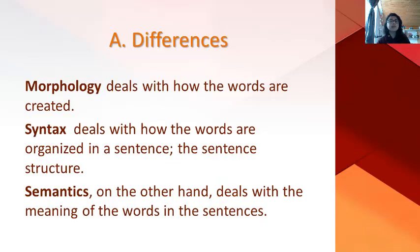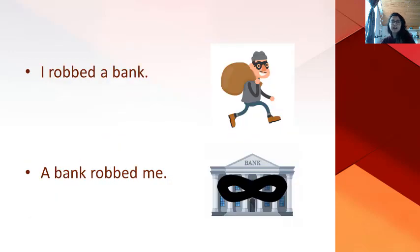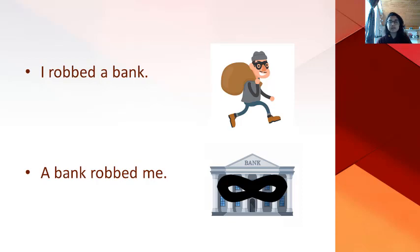Let's start with differences. Morphology deals with how words are created, syntax deals with how words are organized in a sentence and the sentence structure, and semantics deals with the meaning of words in sentences. For example, consider two sentences: 'I wrote a bank' and 'a bank wrote me.' In terms of morphology, these two sentences have exactly the same words. According to syntax, both sentences are valid because they have the accurate word structure of English. In terms of semantics, however, these sentences are different because even though they have exactly the same words, the meaning is different.